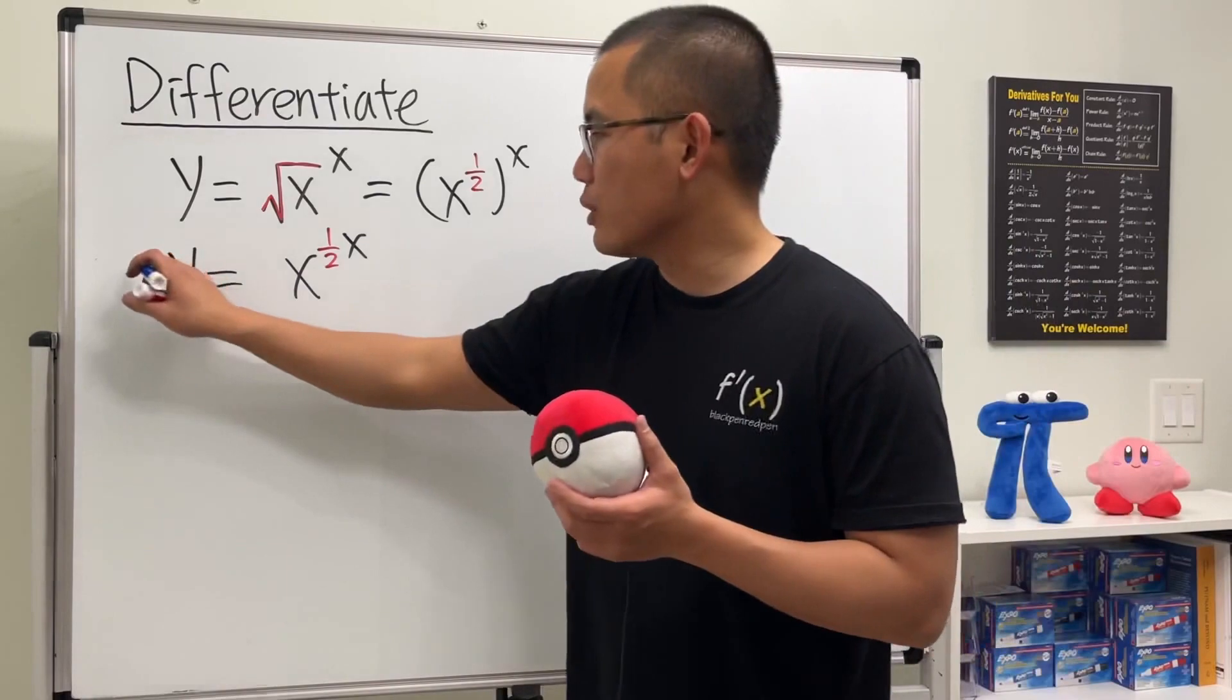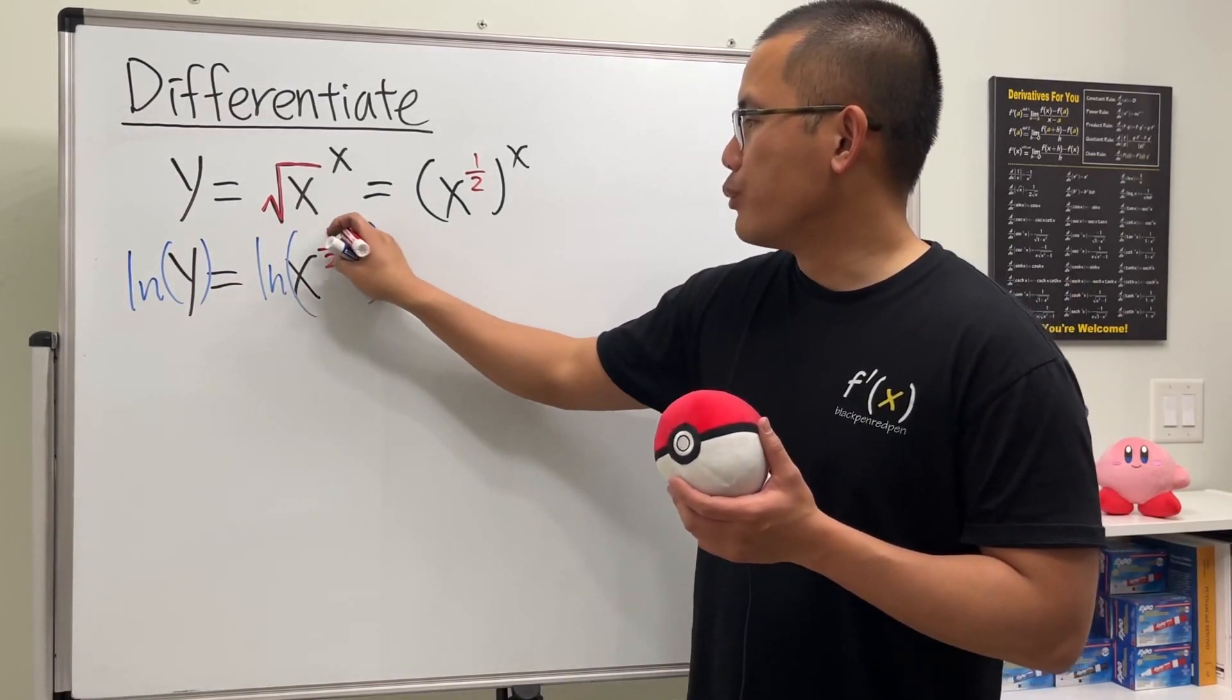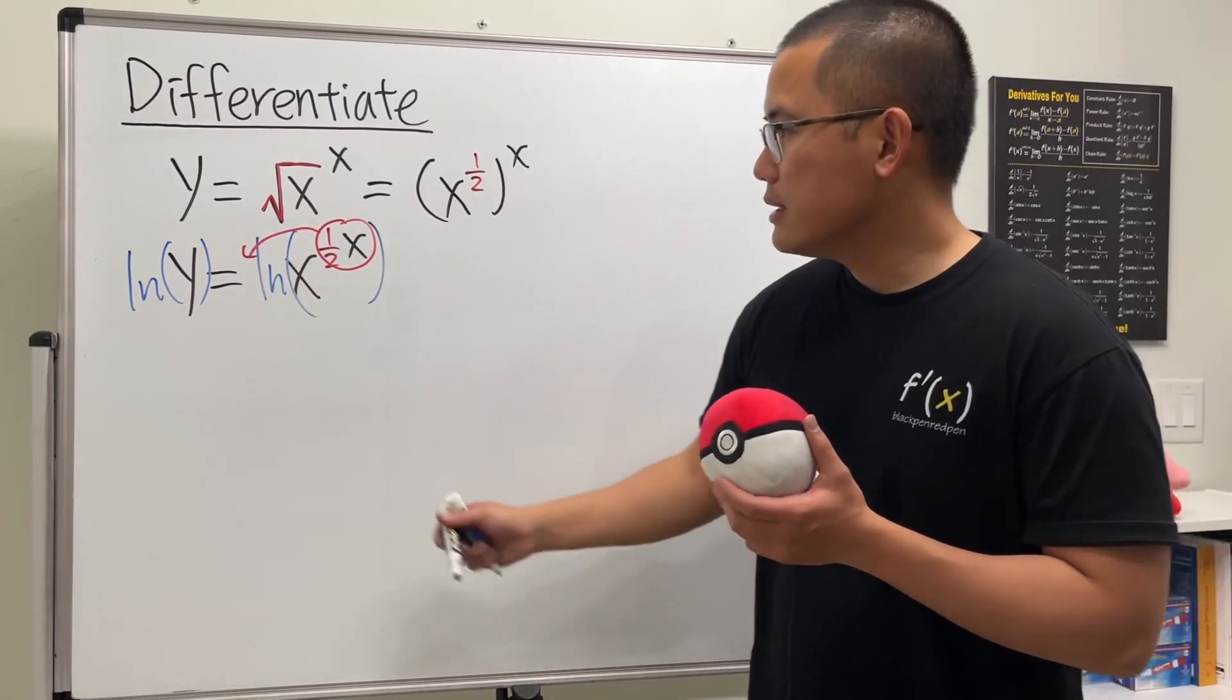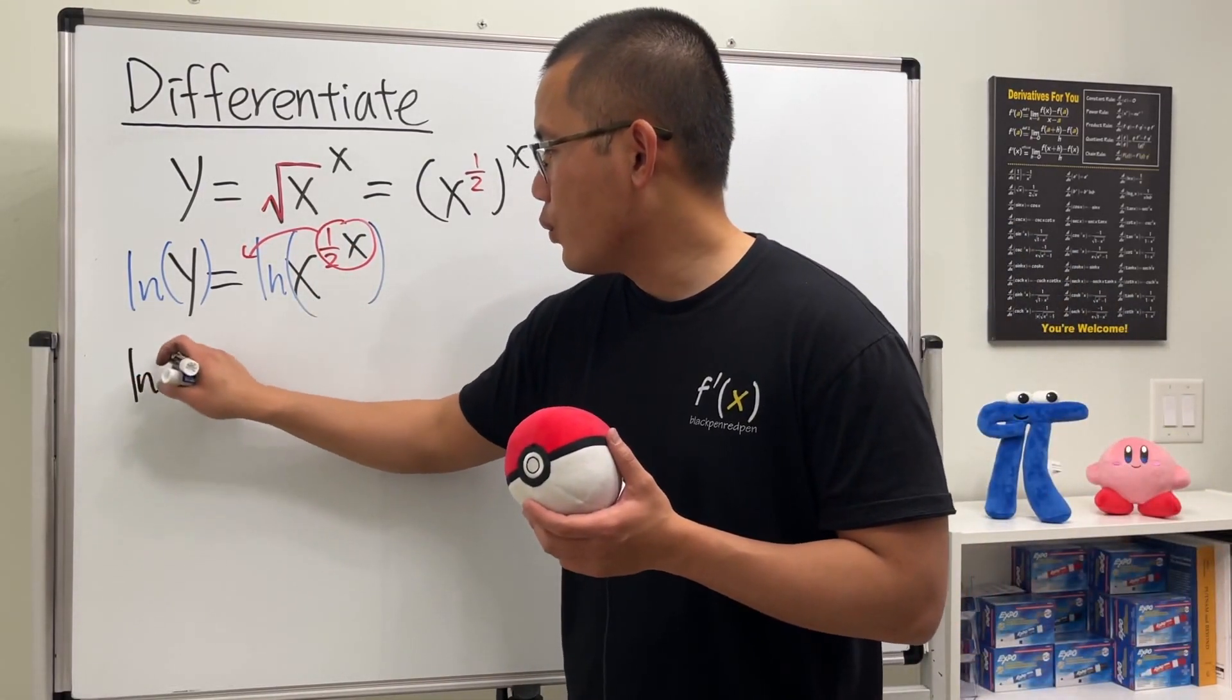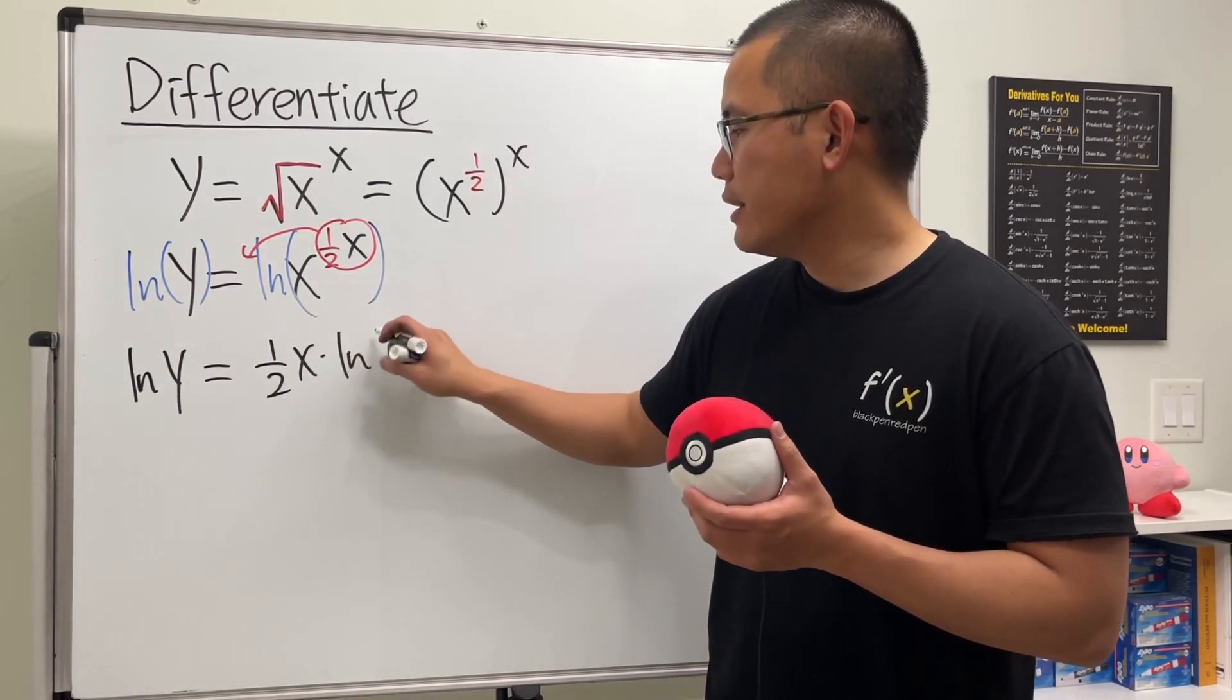Let's take the natural log on both sides. The reason is because we can bring the power to the front. So we are going to have ln y being equal to one half x times ln x.